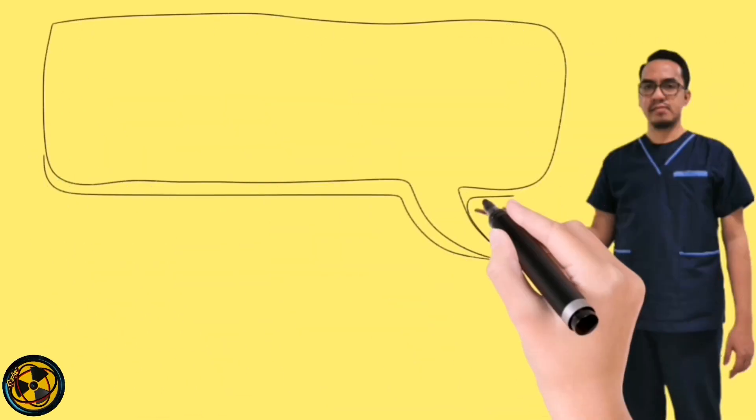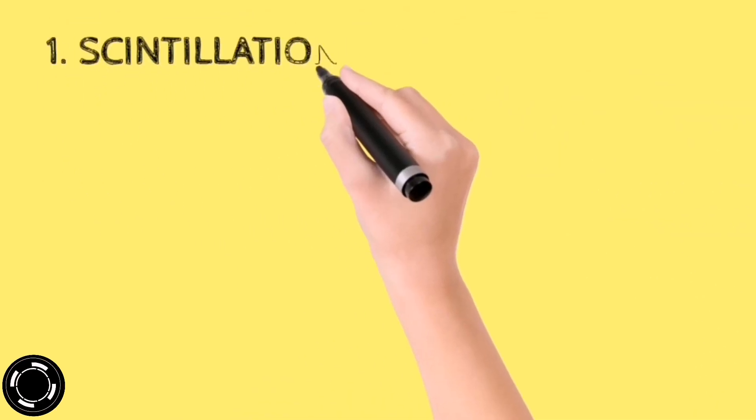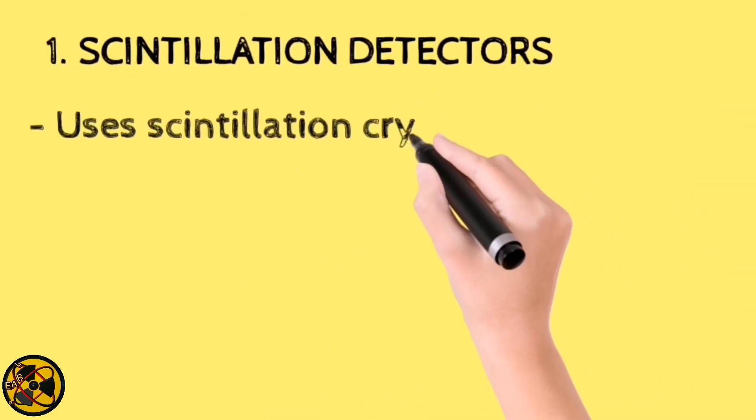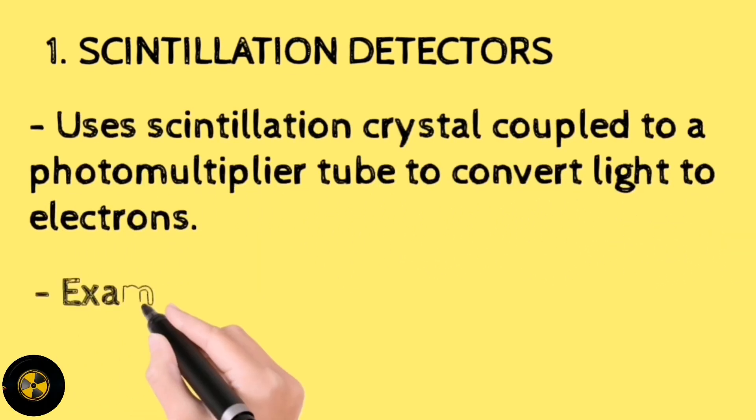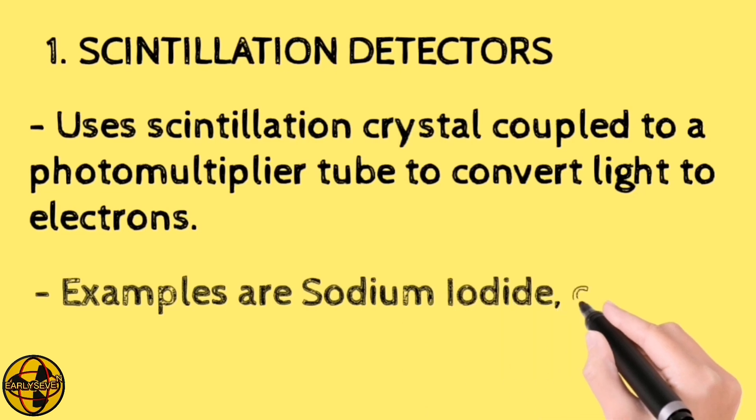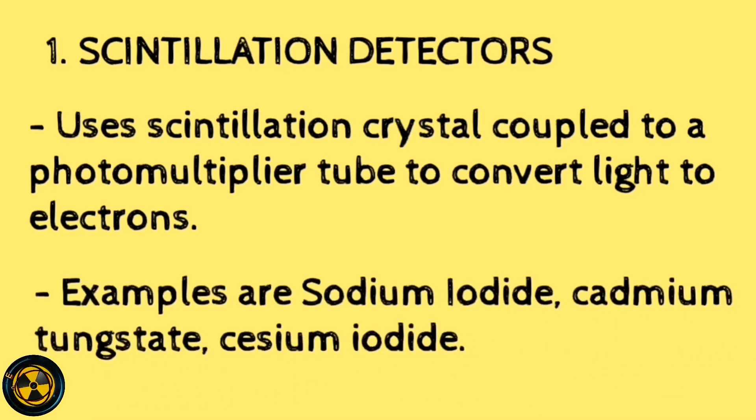There are two types of detectors used in the CT scanner. The first type of detector is a scintillation detector. It uses scintillation crystal, coupled to a photomultiplier tube, to convert light to electrons. Examples are sodium iodide, cadmium tungstate and cesium iodide.